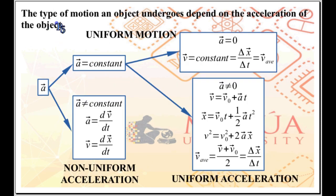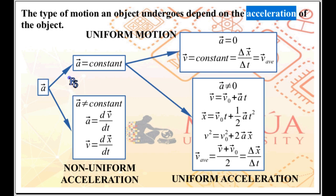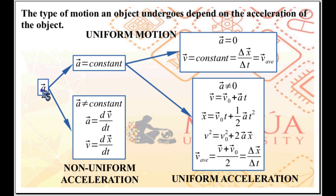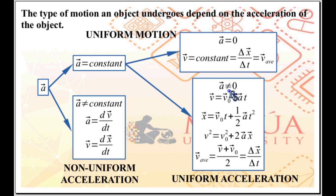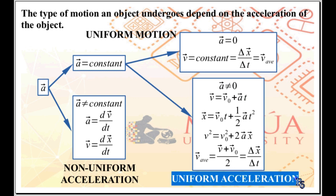It has been observed that the type of motion an object undergoes depends on its acceleration. So focus on the acceleration — it will tell you what type of straight-line motion the object will experience. The acceleration may be constant or it may not be constant. If the acceleration is constant, there are two cases: the acceleration may be constant at a zero value, giving you uniform motion.